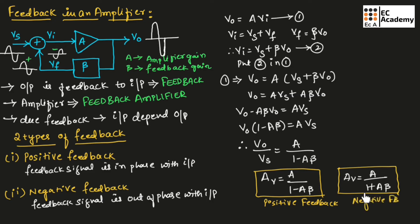In the negative feedback expression, the ratio is A divided by (1 + A·β). Due to this expression, the voltage gain will reduce in negative feedback. So in negative feedback, the voltage gain reduces.